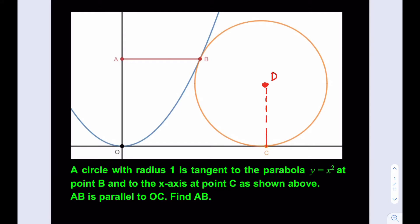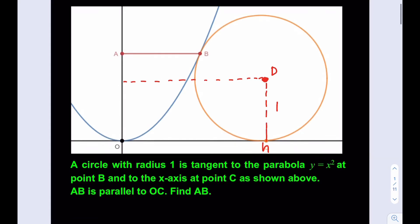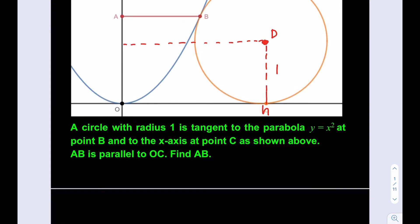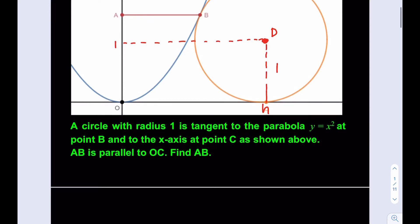We know the circle has a radius of 1, so this distance is 1. Let's call the x-coordinate of the center H. The center D is going to be at (H, 1) and the radius is 1. So the equation for our circle is: (x − H)² + (y − 1)² = 1.